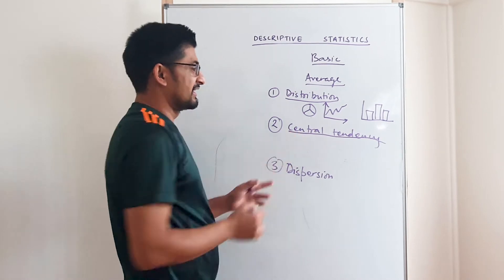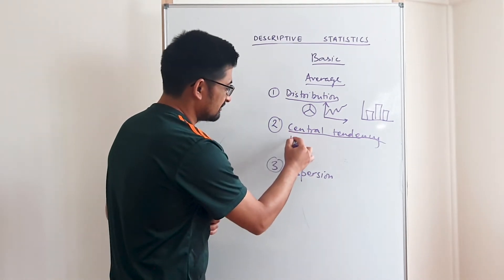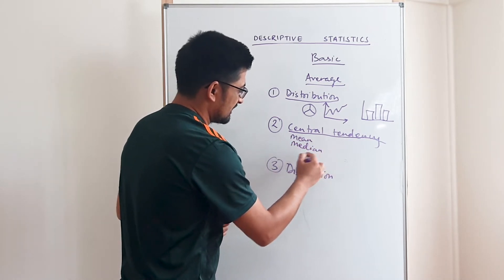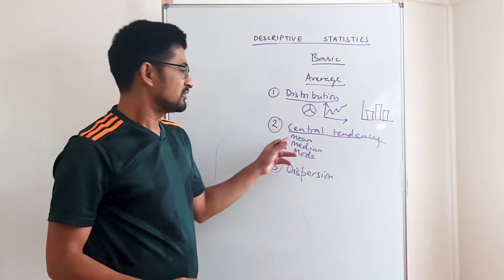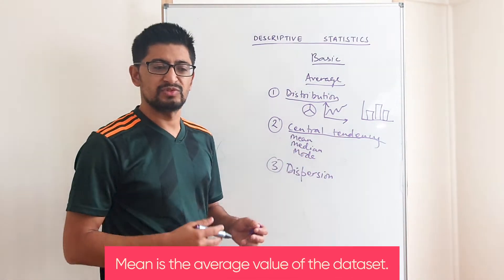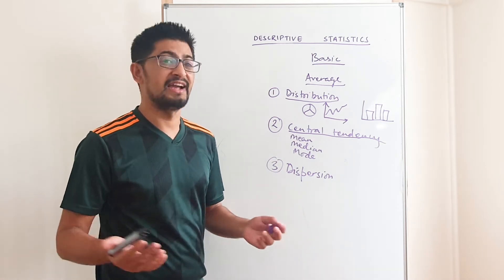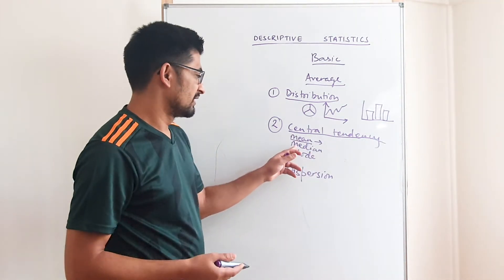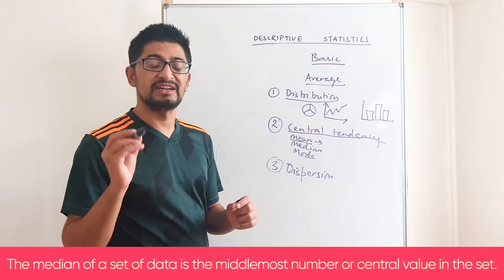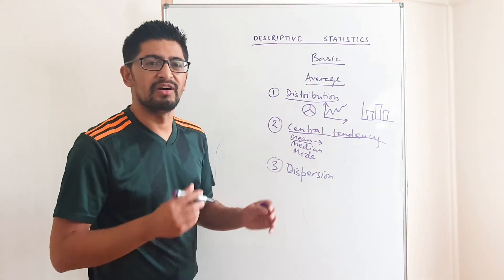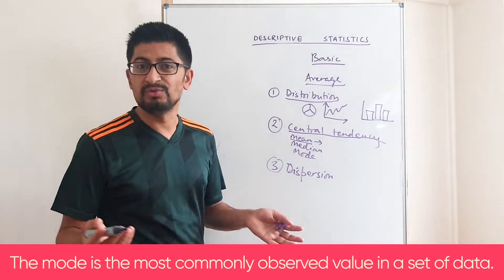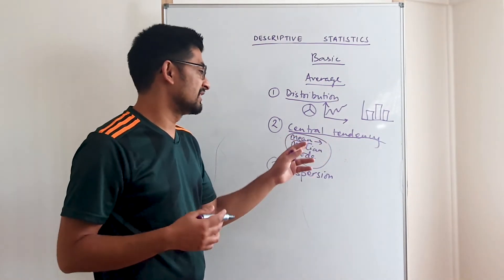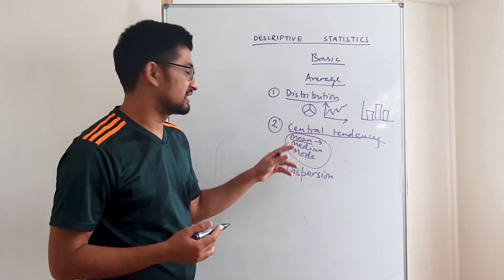The other component is central tendency — that is mean, median, and mode. Mean is average. So let's say there are five students in the classroom with different heights — the mean height is the average height of the students. Median is the central value of any data set, and mode is the value which gets repeated most. If you have taken a statistics class, you will easily understand what those three things mean.